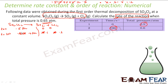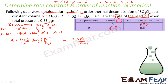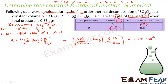Now I know the concentration of SO2Cl2 at a different point in time, so I can find K. The golden formula is K = 2.303/T × log(R₀/R). Plugging in values: T = 100 seconds, R₀ = 0.5 atm, R = 0.4 atm. Solving gives K = 2.231 × 10⁻³ per second.